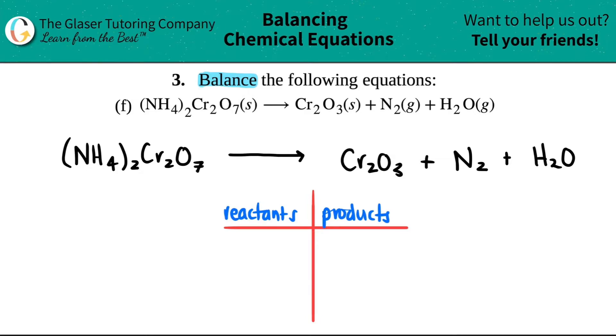Now when we do this chart, we like to only write down the elements, not the compounds. I like to just work from left to right and write down the individual elements on the reactant side. I have four elements here: nitrogen, hydrogen, chromium, and oxygen.